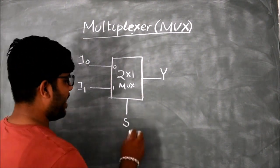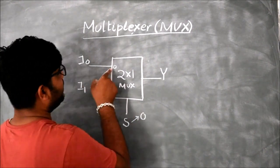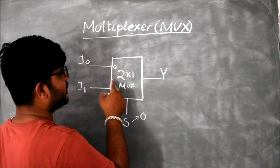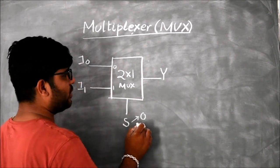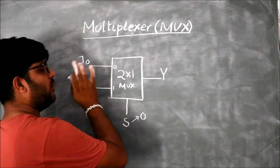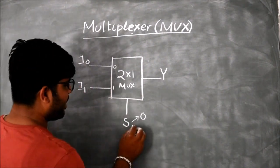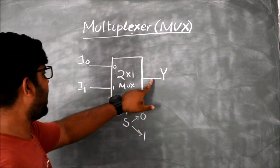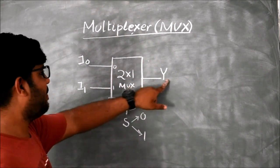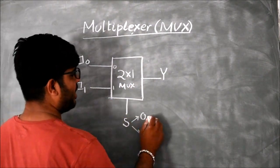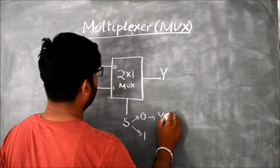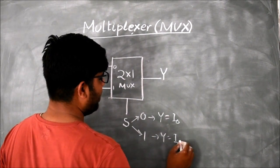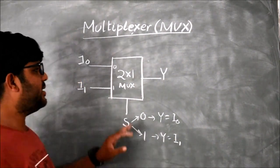If I make S equal to zero, then I0 will be routed to Y. That means I0 is routed to Y. So when S is equal to zero, Y is equal to I0. But if I make S equal to one, then Y is routed to I1, and now the value of Y is equal to I1. So this is the multiplexer.